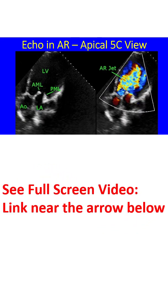Apical 5-chamber view shows the dilated left ventricle, thickened anterior mitral leaflet, and posterior mitral leaflet. In this view also, the AR jet is large, extending deep into the LV, indicating severe AR.